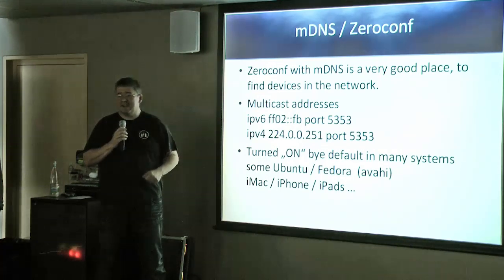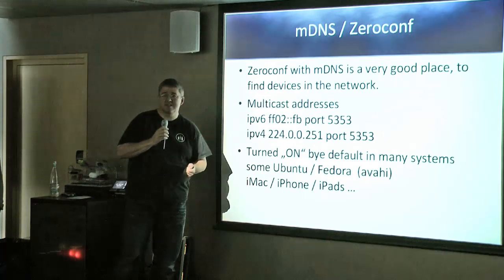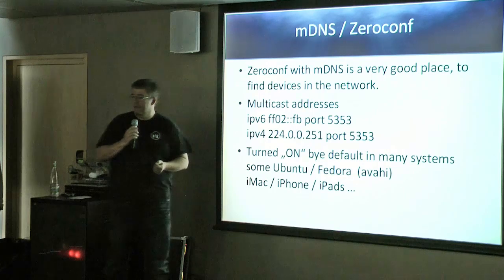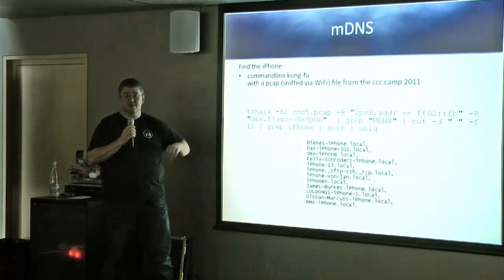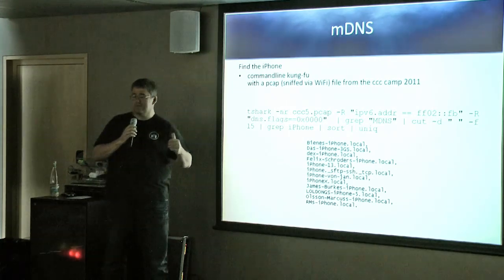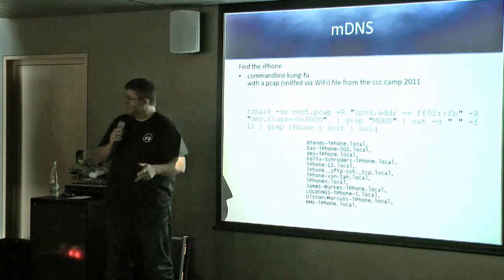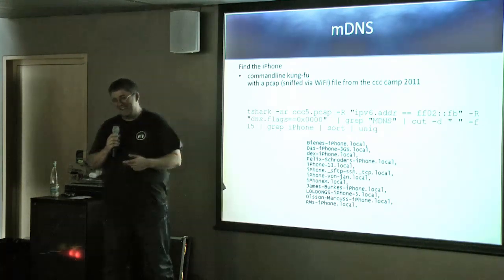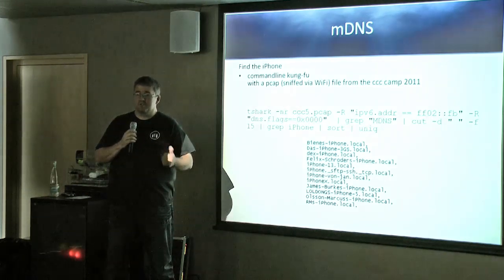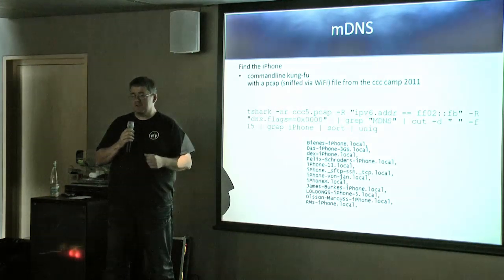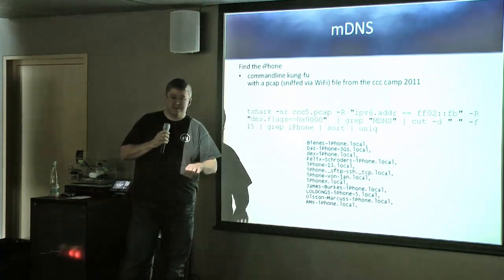Each device stores received mDNS information locally in case it needs to connect to that device in the future. On most Apple devices — iPhone, iPad, iMac — it is turned on by default. It can also be enabled on Linux and Ubuntu workstation versions by default, but not on the server version.